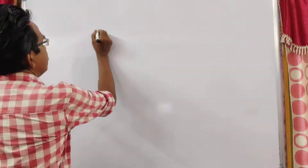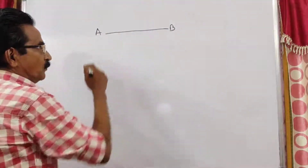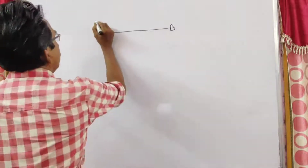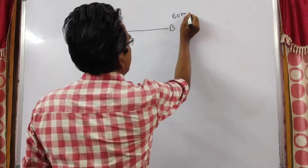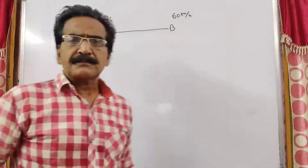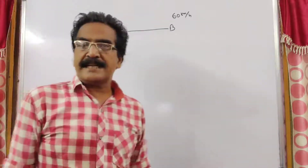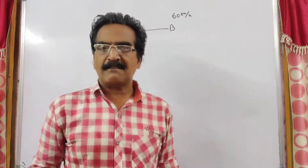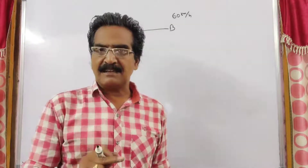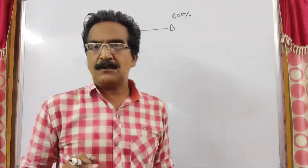Find the distance between A and B. Two trains started from A and B towards each other with a speed of 50 kmph and 60 kmph respectively. In every one hour, the first train travels 50 km and the second train travels 60 km, so the second train travels 10 km more than the first train every hour.